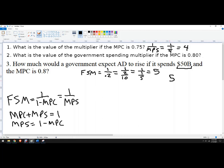I'm going to multiply $50 billion by 5, and I get $250 billion of additional spending, and that is the answer to number 3.